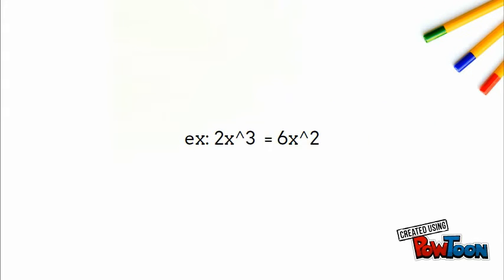For example, if you have 2x to the third power, you multiply the exponent 3 by the connected integer 2 to get 6. Then you subtract 1 from the exponent, getting 2, leaving you with the answer 6x squared.